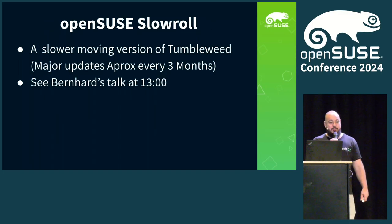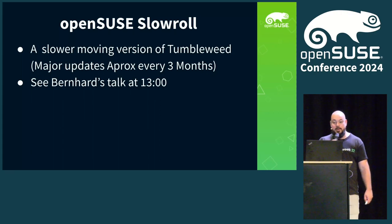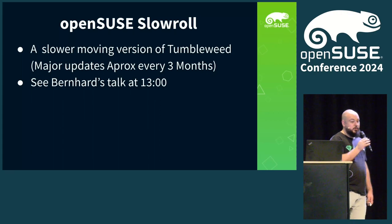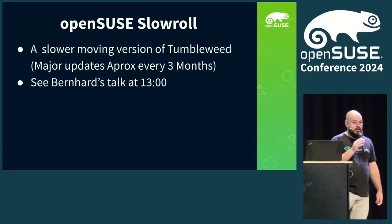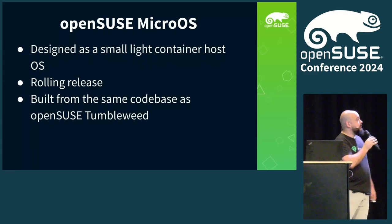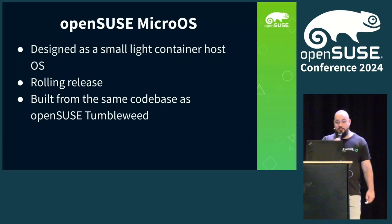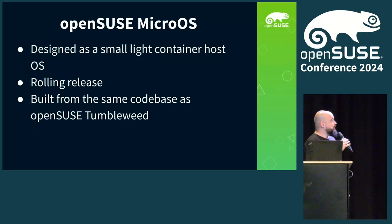Tumbleweed gets updated maybe six times a week. If that is too many times a week for you and you want something that gets updated every month or every couple of months, then we have OpenSESA Slow Roll, which is experimental — it basically just slows down and caches the cadence of updates from Tumbleweed so you don't have to update quite as often. Next, we have OpenSESA MicroOS, which is the upstream for Leap Micro — a small lightweight container and VM host, also used as a rolling release built on the same platform as Tumbleweed.